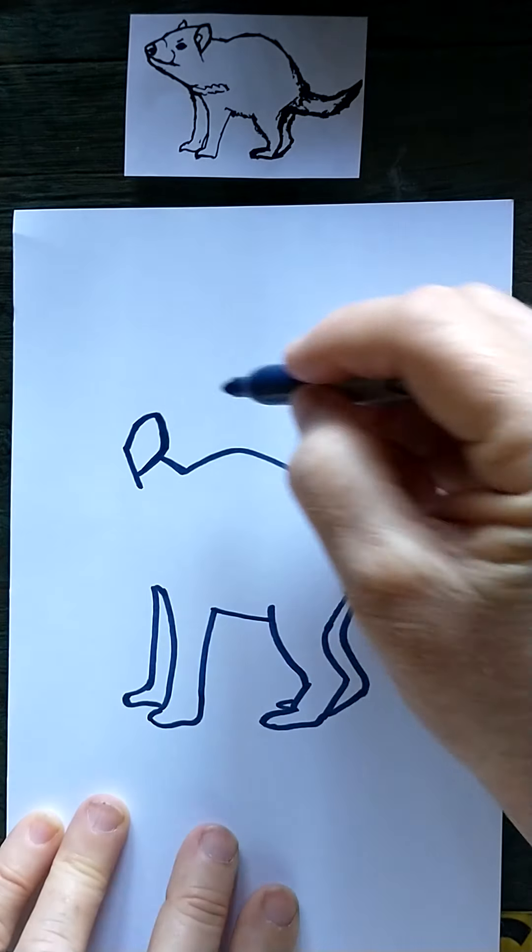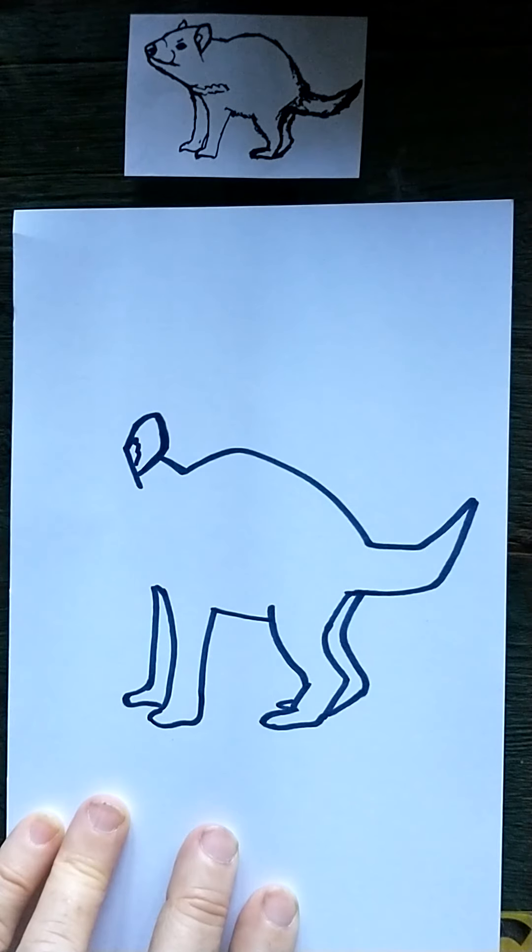And it meets the head like that. And that little line that goes over represents kind of the fur. So there's some fur in the ear.